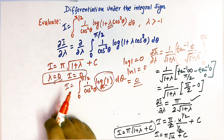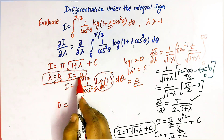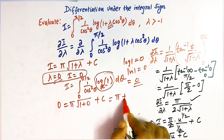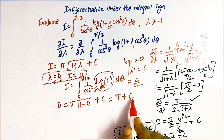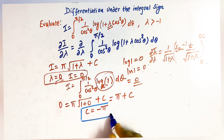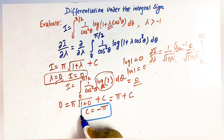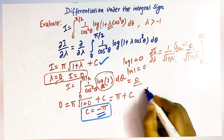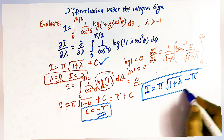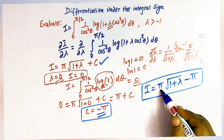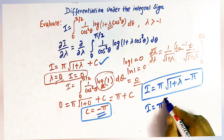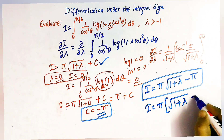Substituting λ = 0 and i = 0: 0 = π·√(1+0) + c = π·1 + c = π + c, so c = −π. Therefore the final result is i = π·√(1+λ) − π = π(√(1+λ) − 1). This is the value of the integral for all λ > −1.